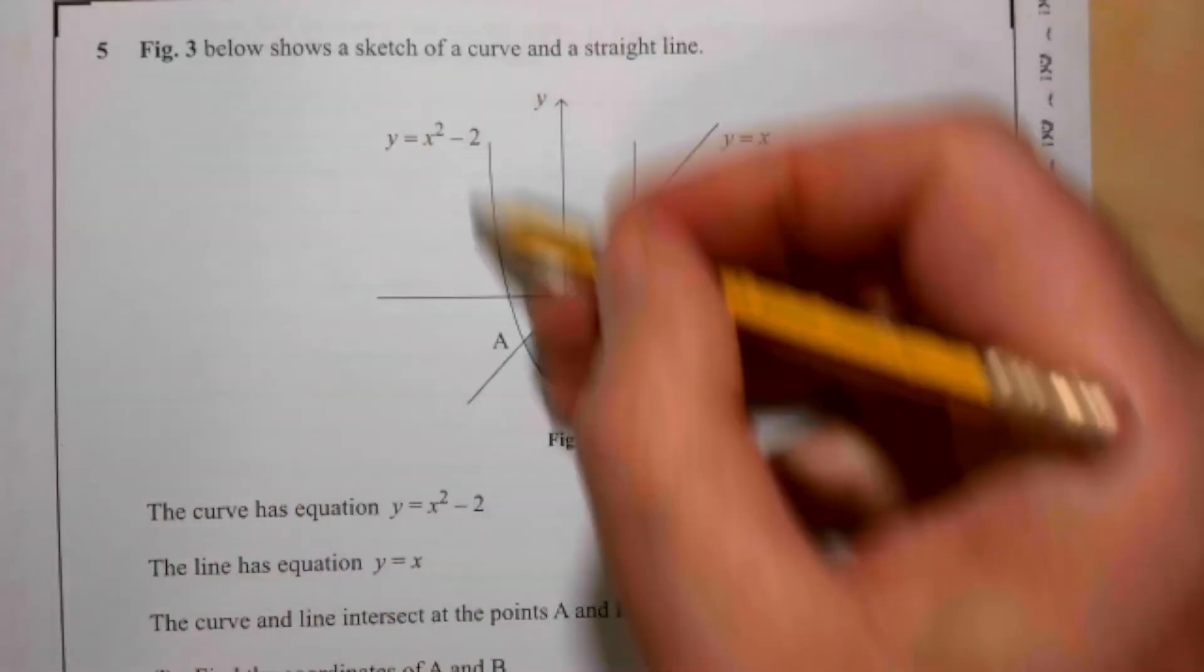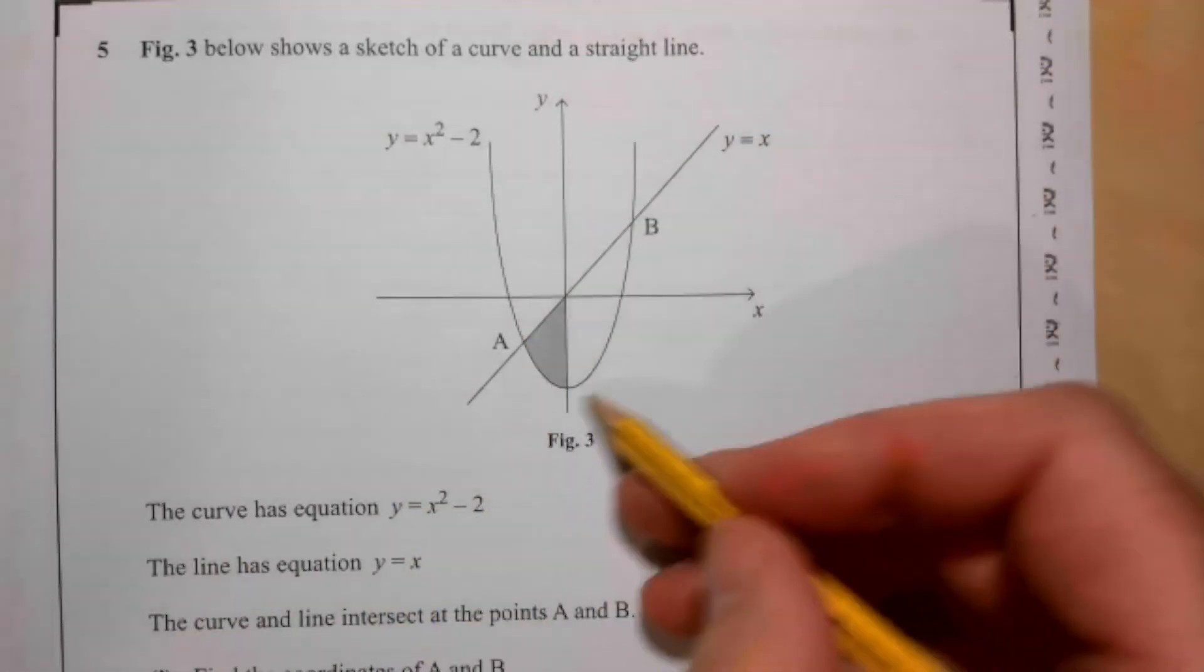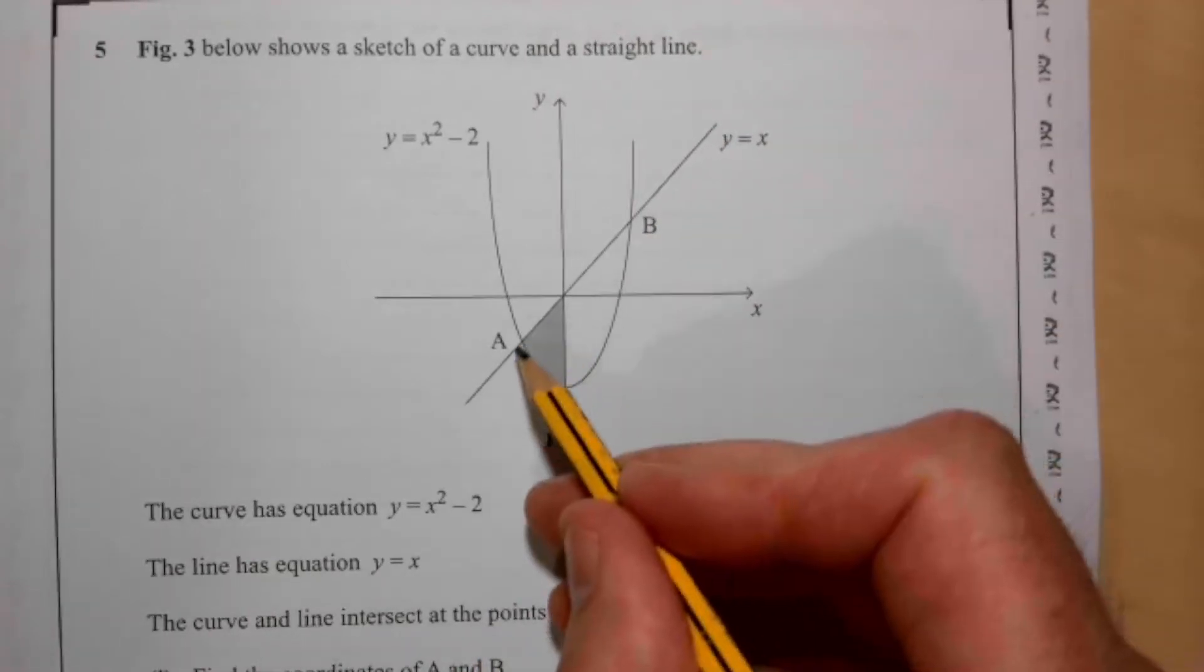Below shows a sketch of a curve and a straight line. The curve has equation y equals x squared minus 2, the line has equation y equals x, and the curve and line intersect at the points A and B.